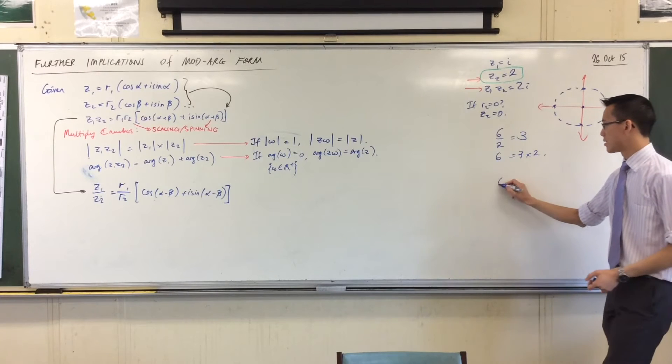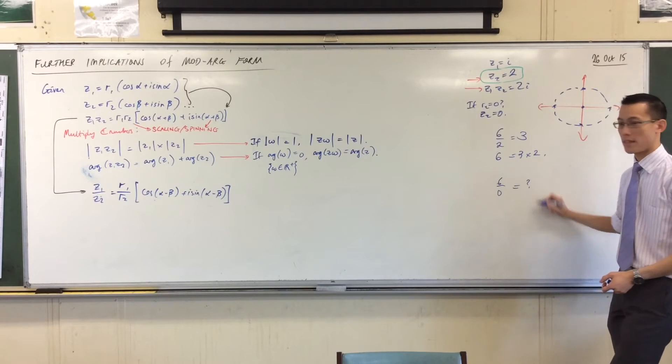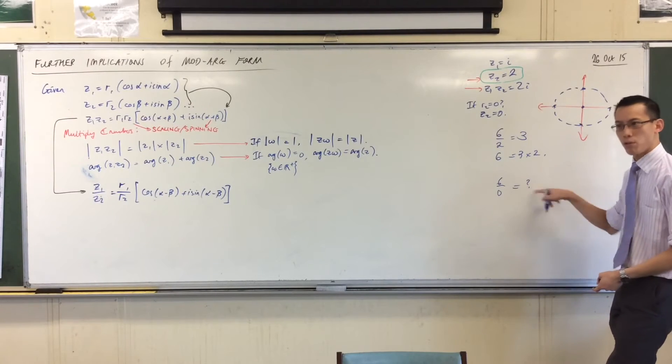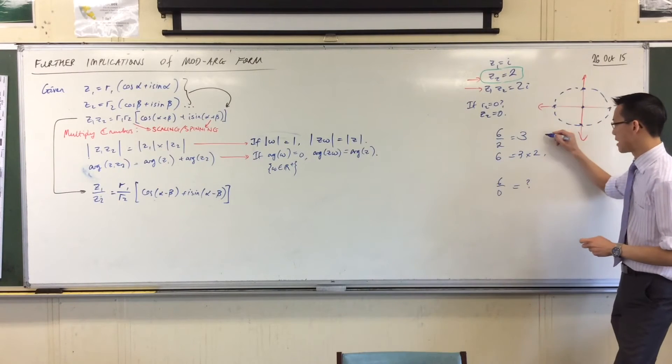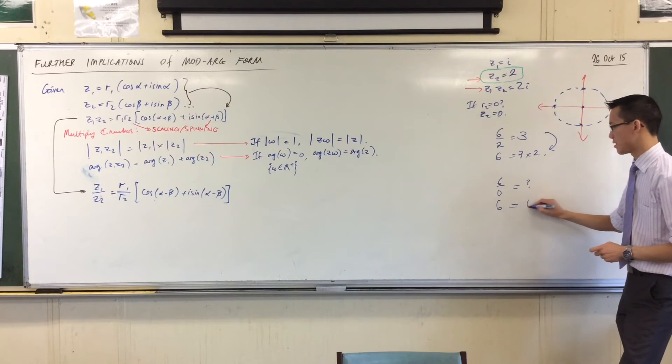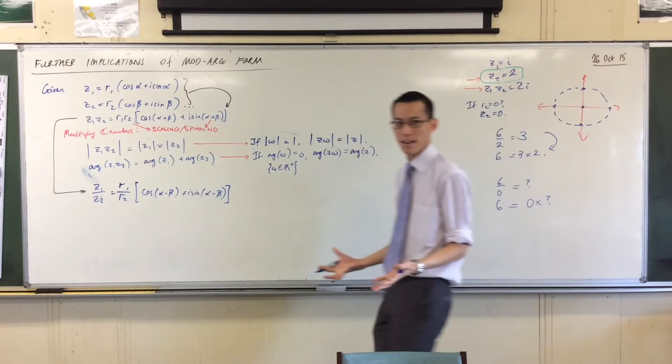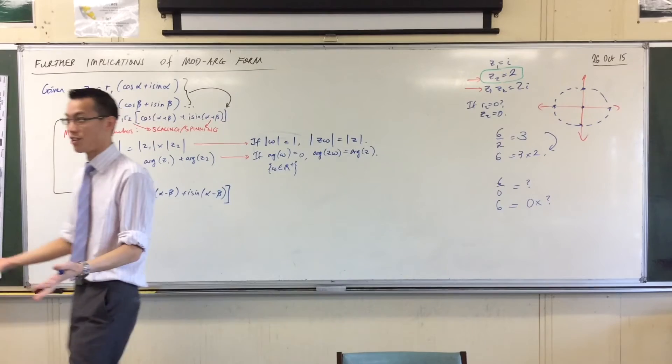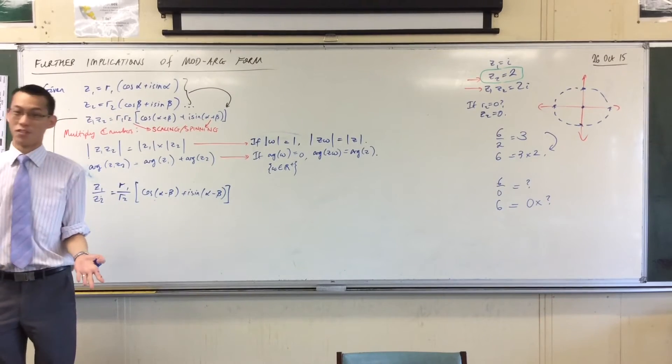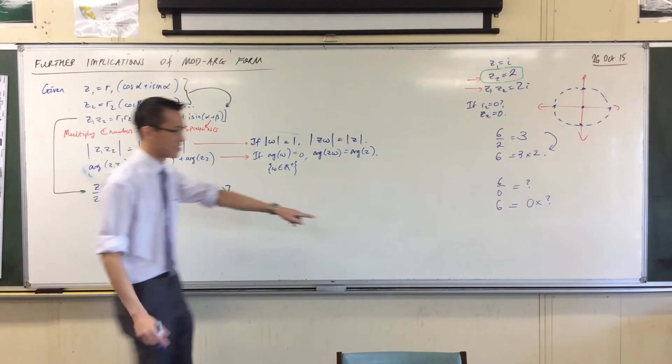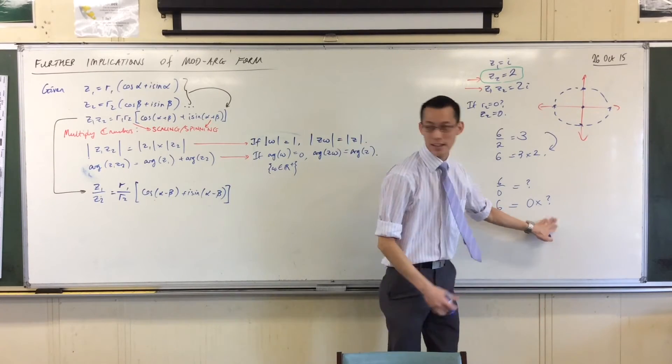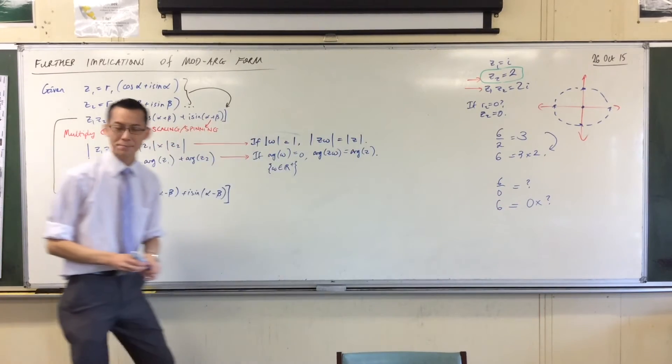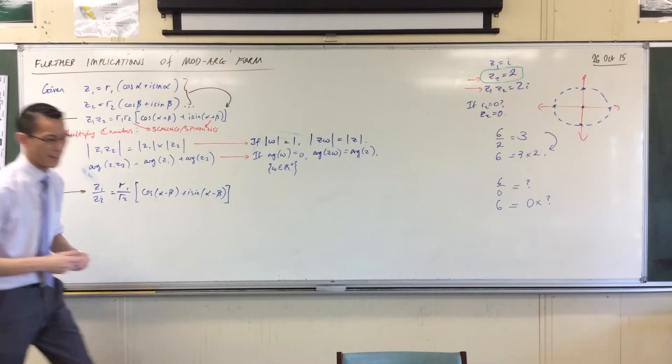But if you go 6 over 0 equals something, then no matter what you put over here, no matter how you define it, right? Then, by definition, you should be able to say that 6 is 0 times that something. But there's no thing that you can multiply by 0 such that you get 6 or 5 or any other non-zero number. So this is why it's not that mathematicians are lazy. It's that you can't define it with anything. No matter what you put in here, you will break things, okay? That's why division by zero is undefined. Okay, excellent.